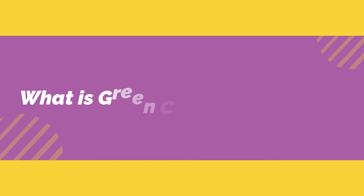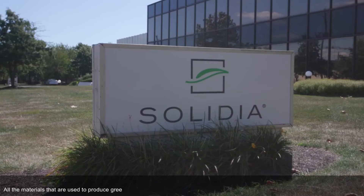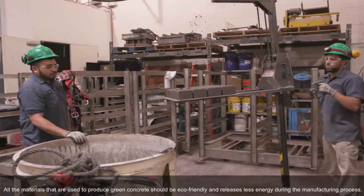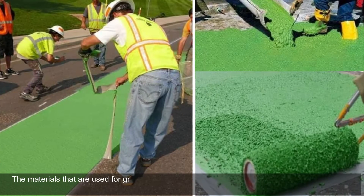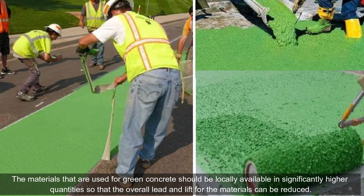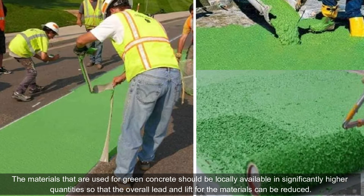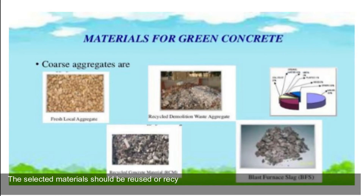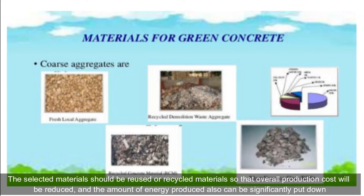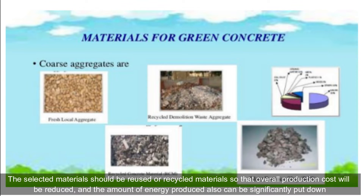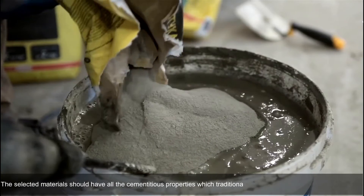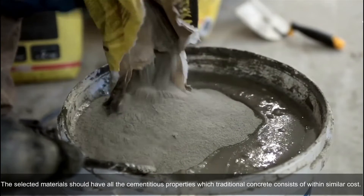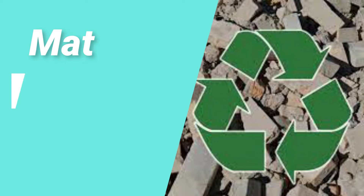What is green concrete made of? All the materials used to produce green concrete should be eco-friendly and release less energy during the manufacturing process. The materials should be locally available in significantly higher quantities so that the overall transport distance can be reduced. The selected materials should be reused or recycled so that overall production cost and energy consumption can be significantly reduced. The selected materials should also have all the cementitious properties which traditional concrete consists of, within similar cost.